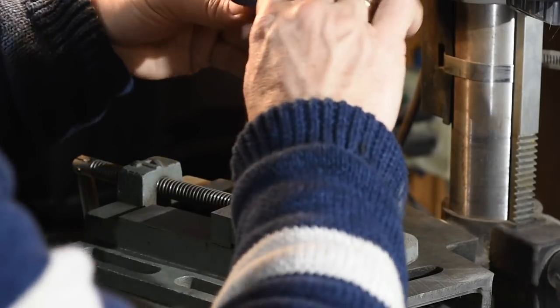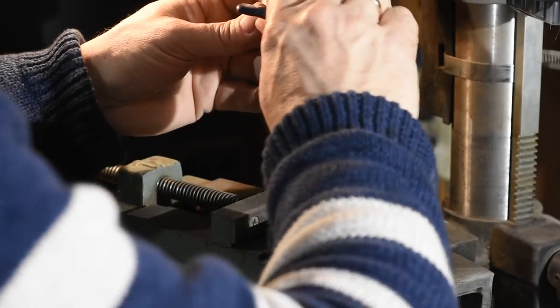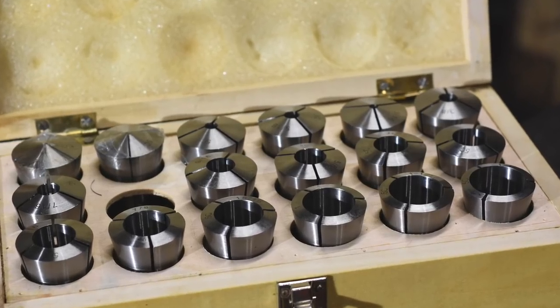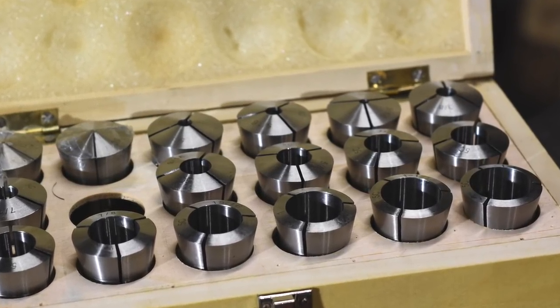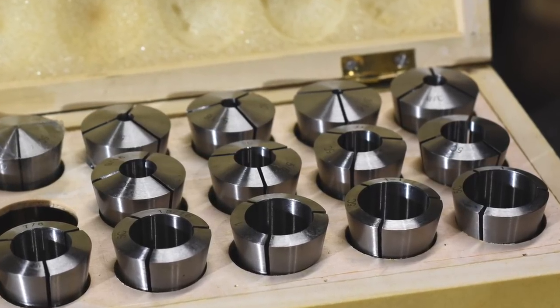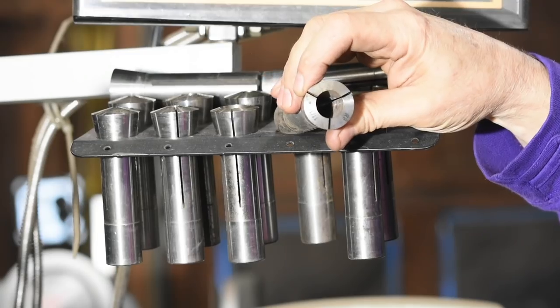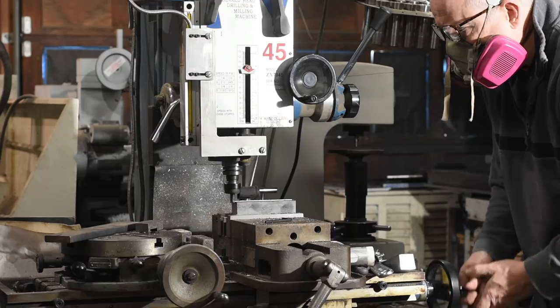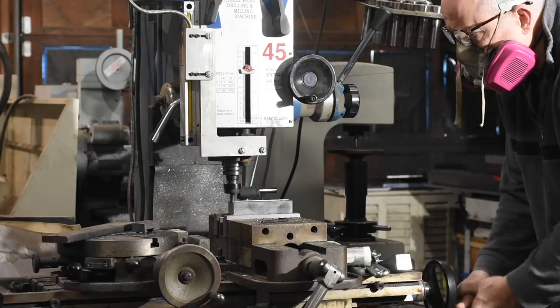Unlike a drill chuck, which will hold an infinite number of tools within a given range, collets are made for a very specific size of tool. This set of 5Cs runs in common sizes from a 16th of an inch to an inch and an eighth. These R8s cover a fairly similar range. So why use a collet instead of a chuck? A couple reasons.